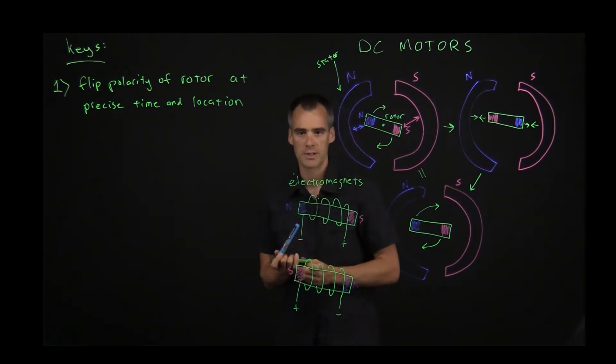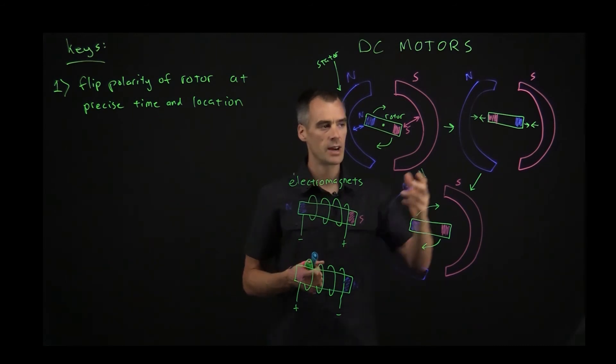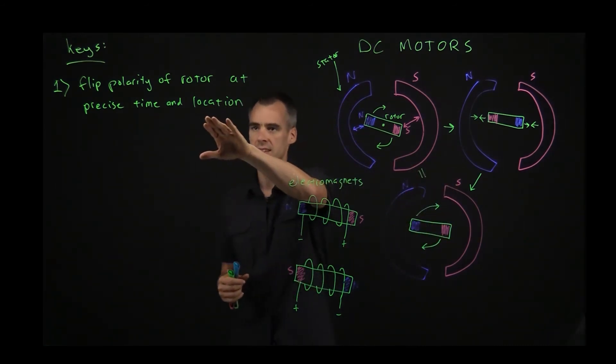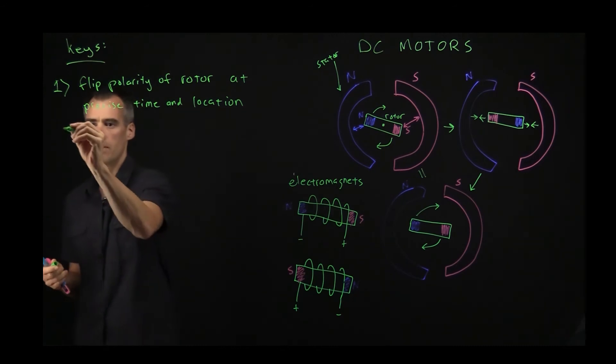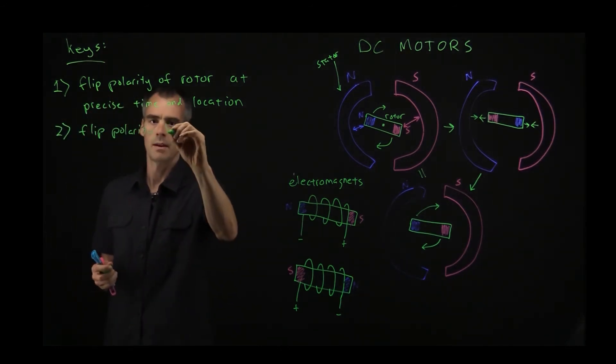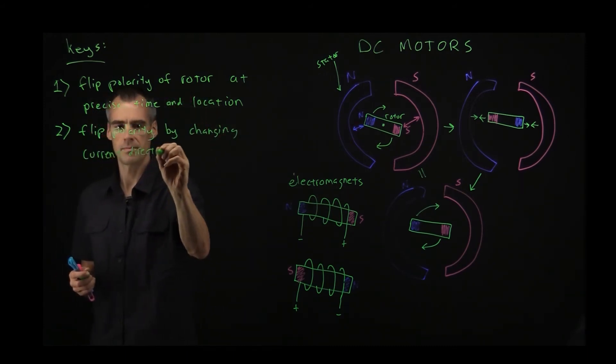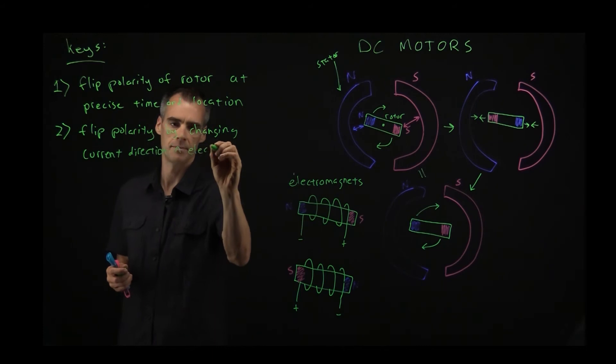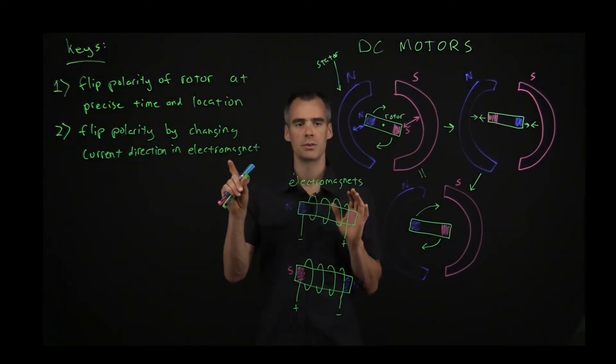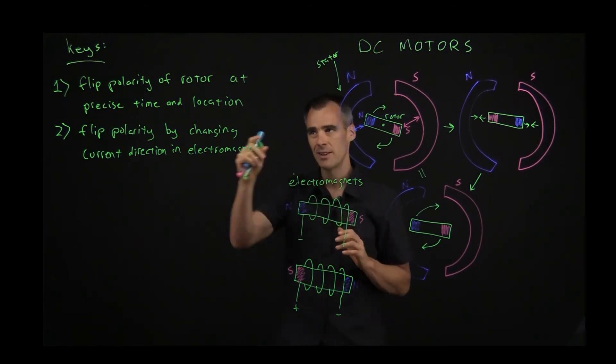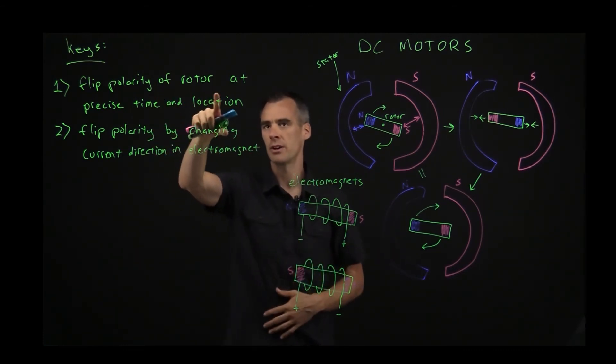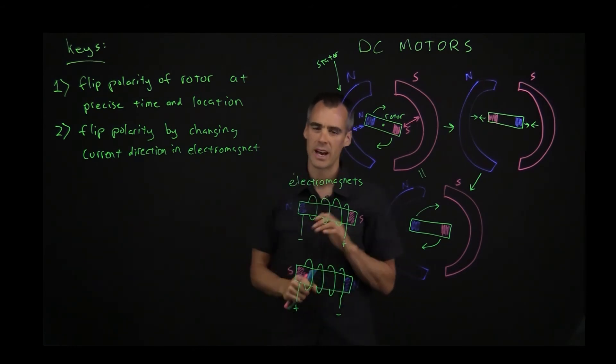So this is what I would say is key number two for an electric motor is you got to flip the polarity at the right precise time and location. And the way that you do that by changing current direction in the electromagnet. These are the two first keys that we have here. But you got to flip the polarity at the precise time and location. Yeah, we know how to do that, but we got to do it at the precise time and location. So how do we do that? And that's the really tricky part of this. And that's where the ingenuity of the DC motor is pretty cool. So let's take a look.